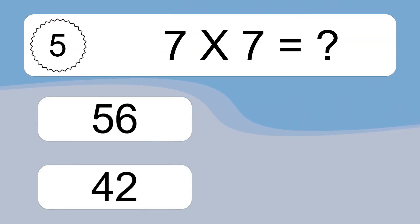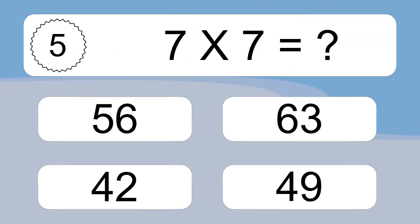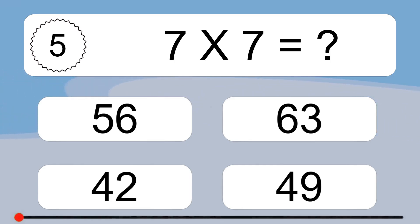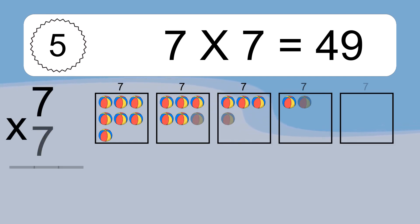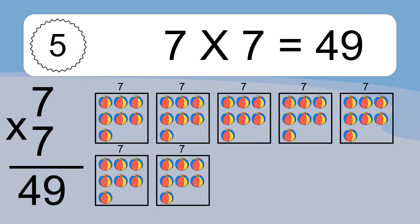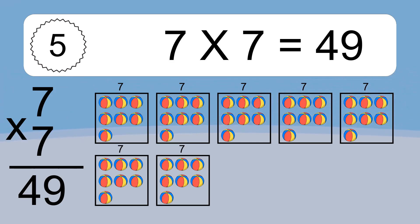Seven times seven equals what? Seven times seven equals forty-nine. We have seven boxes, and each box has seven colorful balls inside. If you count all the balls in all the boxes together, you will have seven times seven balls. This equals forty-nine balls.